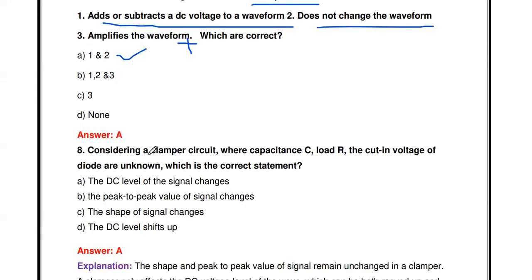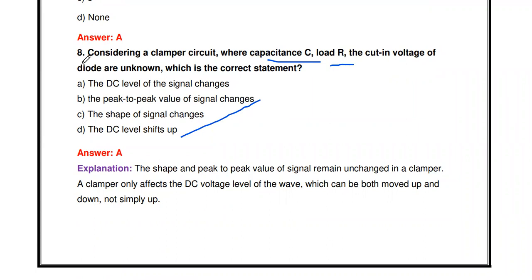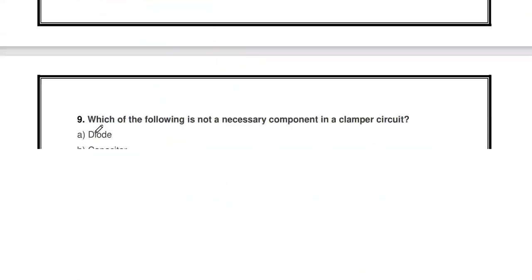Next question: For a clamper circuit where capacitance C, load R, and the cut-in voltage of the diode are known, which is the correct statement? The peak-to-peak value of the signal does not change; the shape of the signal does not change. The correct statement is that the DC level of the signal changes.